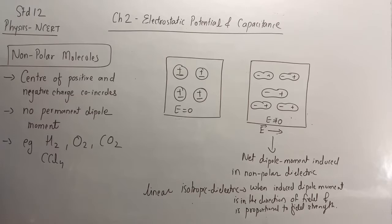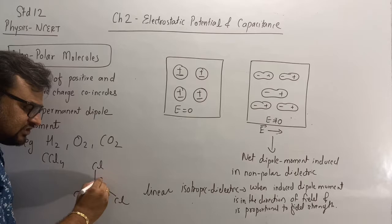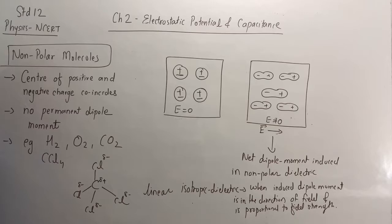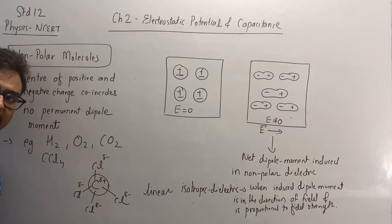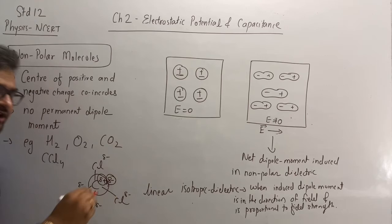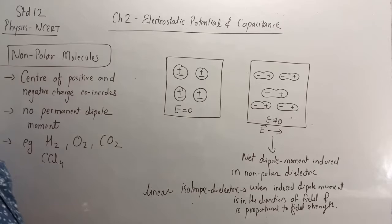Let's take the example of CCl₄. If I draw the structure, it will be tetrahedral. Carbon possesses partial positive charge and chlorine possesses partial negative charge, since chlorine is more electronegative than carbon, so electrons are drawn towards chlorine. The center of positive charge is at the carbon, and when you take the center of the four negative charges at the corners, it also falls at the same central place. So CCl₄ is considered a non-polar molecule — the center of positive and negative charge coincides.